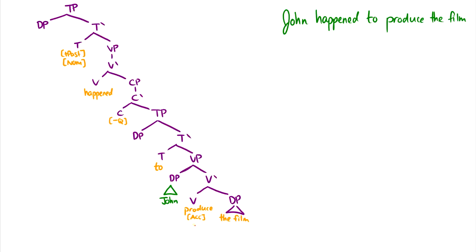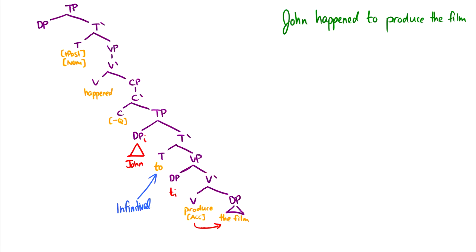We have accusative case on 'produce' that goes to 'the film,' so that checking is good. We move John up to spec TP like we normally do. John ends up in this position — this is the I — and there's a trace below. Now, John is supposed to get nominative case from T, but this is an infinitival 'to,' and infinitivals do not carry any case. So if John stays in this position, there is no nominative case for John to get, which means this derivation is bad.